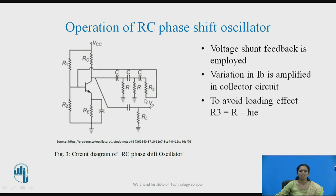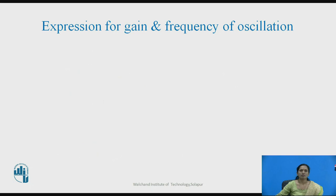As we are providing feedback, and to avoid the loading effect on the transistor amplifier, we are selecting the value of R3 at minimum — nothing but R minus Hre, which is the input impedance of the transistor amplifier. Variations in the base current are amplified in the collector circuit, giving changes in the output that are used again as input to the amplifier stage. Therefore, there will be regeneration of the signal and oscillations are obtained at the output. Now we will see the derivation for gain and the frequency of oscillation.